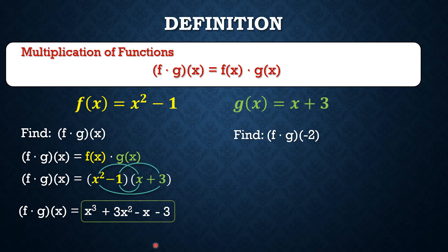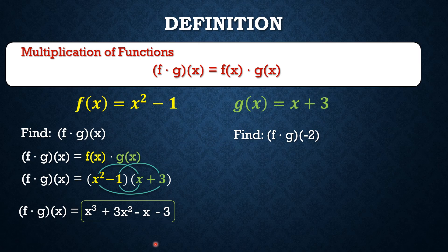So basically, this is the result. This is another function that was formed after we multiplied f(x) and g(x). And now, let's find (f · g)(-2).